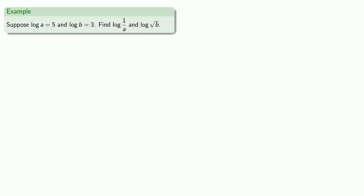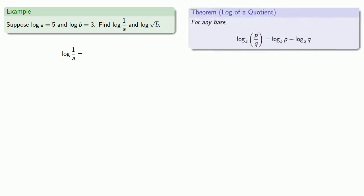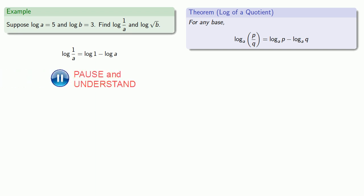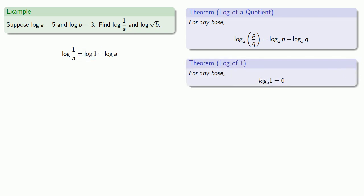Let's play around with these rules. Suppose log of a is 5 and log of b is 3. Let's find the log of 1 over a. We can think of 1 over a as 1 divided by a, which is a quotient, so we bring in the rule for the log of a quotient: log of 1 divided by a is log of 1 minus log of a. We know that for any base the log of 1 is 0, so we can simplify and do the arithmetic.